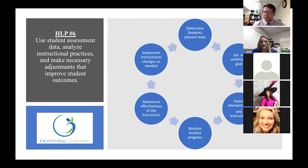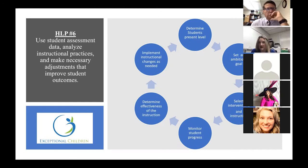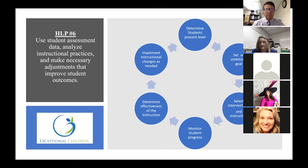We may have 20 kids on a caseload — 20 different students with individual needs — where we are doing this continuous cycle of improvement for each of them. As we think through that goal, we're glad you have the slide that talks about setting an ambitious goal.